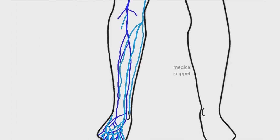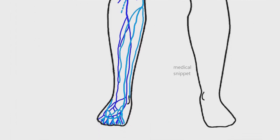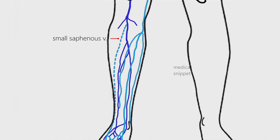The small saphenous vein passes posterior to the lateral malleolus and ascends along the lateral border of the Achilles tendon. In the upper part of the leg, it pierces the deep fascia and drains into the popliteal vein.